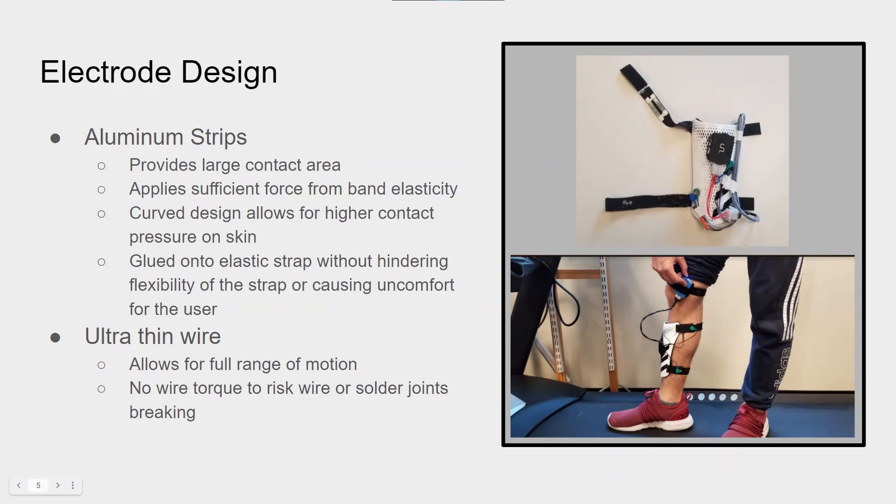Our physical implementation consists of four long aluminum strips used as our dry electrodes. Those four are glued to the inside of the shin guard straps. These strips provide enough surface area for good contact.